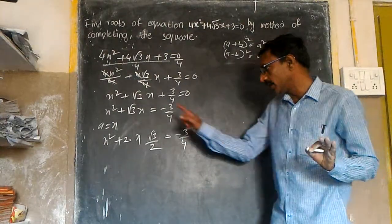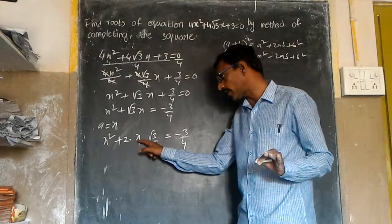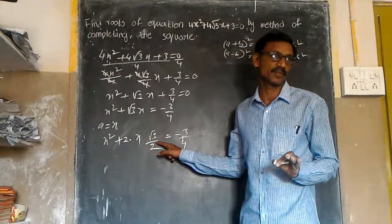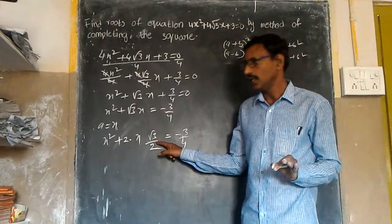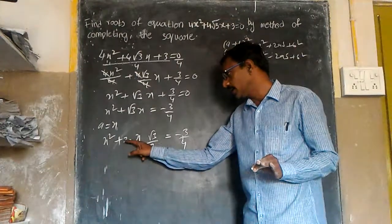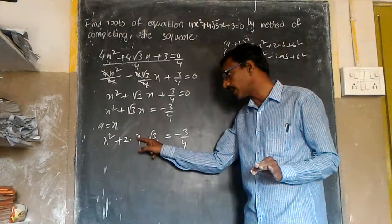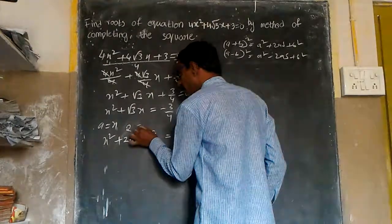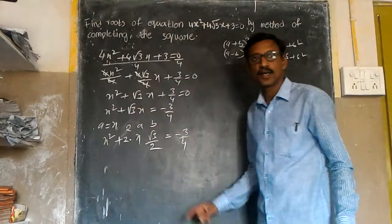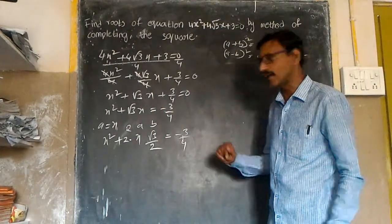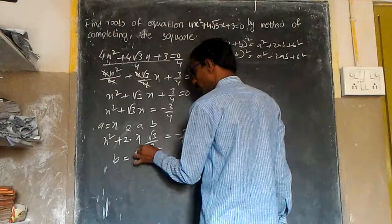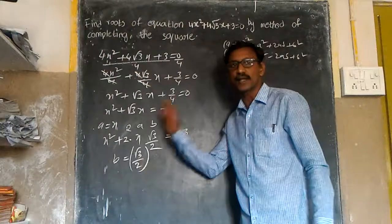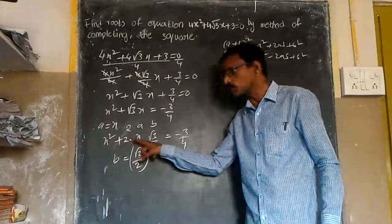To get a complete square a² + 2ab + b², we need to add b². So we introduce the square: x² + 2·x·(√3/2) + (√3/2)². Whatever we add on the left, we must add on the right side too.